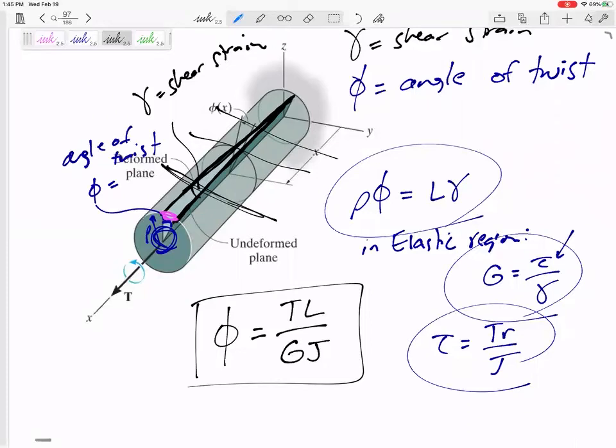Did all that just to get there. That equation, angle of twist, is the angle that the cross-section twists, that makes sense, angle of twist, due to a torque T, and it is T L over G J.